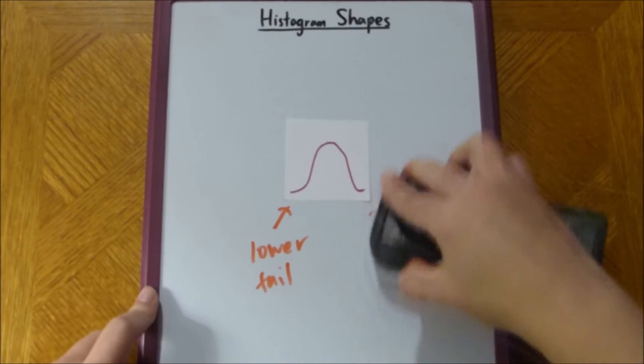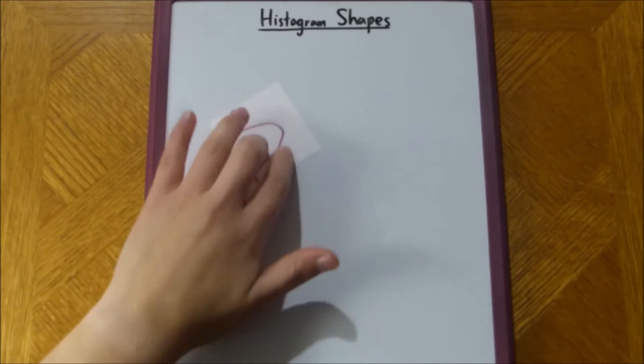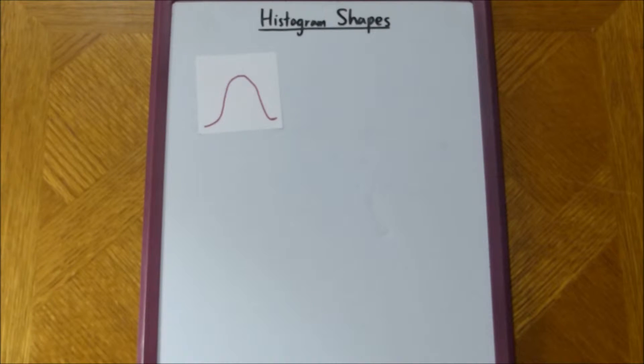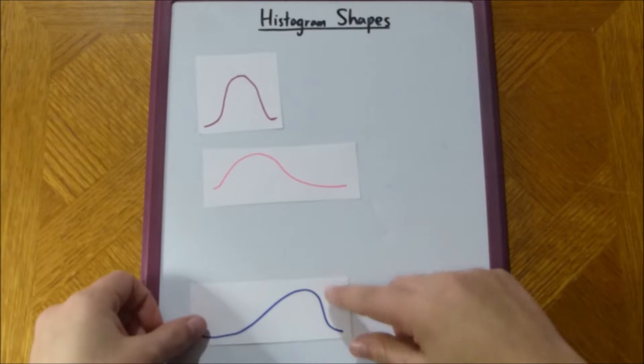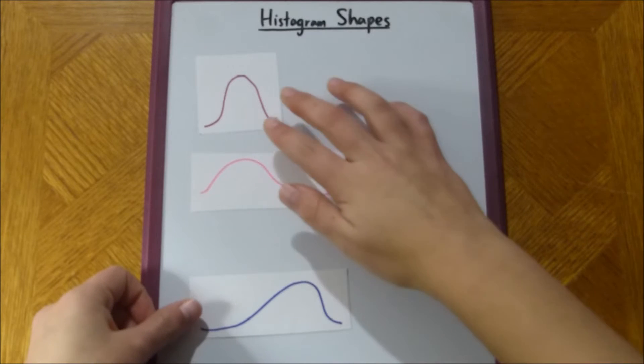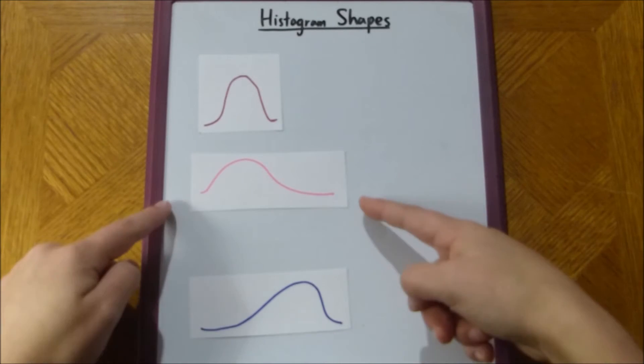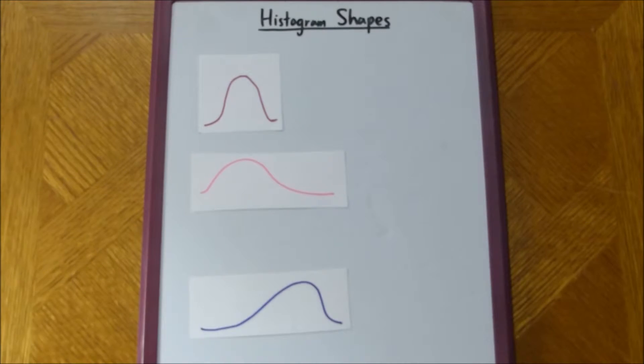So, let's say we have, oh, it's going to float away from me. Let's say we have two other graphs. We've got this one, and we've got this one, right? So, you can definitely see that there's a skew in both of these, but there's two different types of skews.